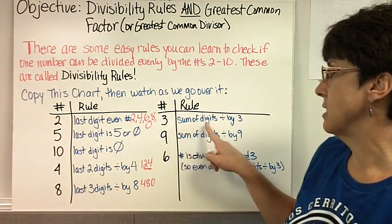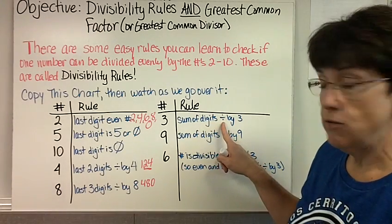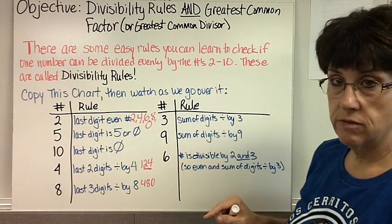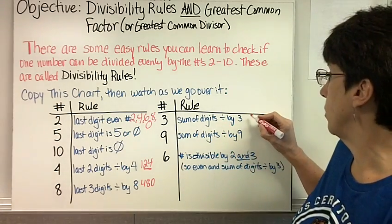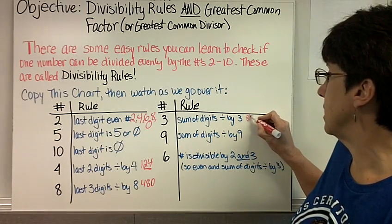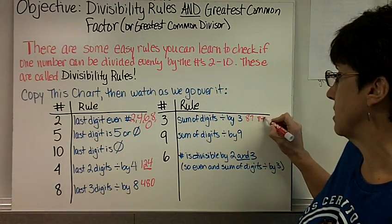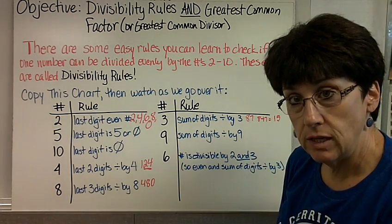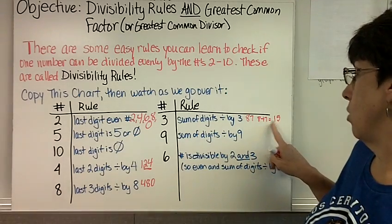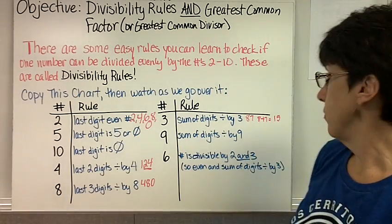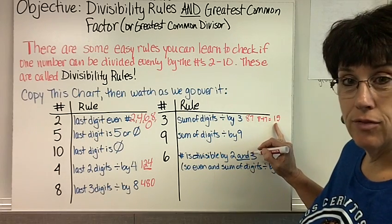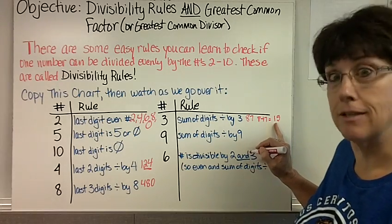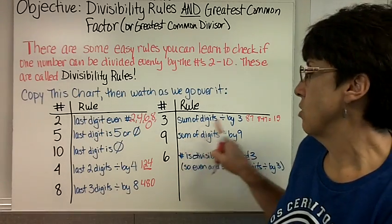These next two rules are pretty fun. The divisibility rule for 3 is the sum of the digits. If you add up the digits and that number is divisible by 3, then the whole number is divisible by 3. So, for example, if I have 87, I could do 8 plus 7 equals 15. Does 3 go into 15 evenly? Yes, it does. Then it will also go into 87.